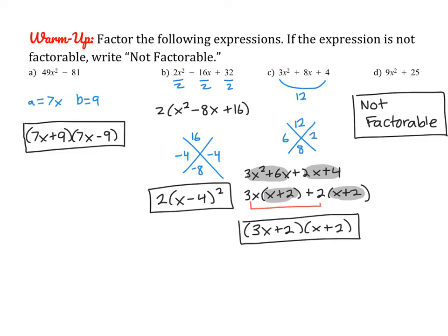Part D is not factorable because there is no such thing as sum of two perfect squares. There is difference of two squares, but there's no such thing as sum of two squares. If any of these methods you feel a little bit rusty on, please go back and watch the old videos because factoring is not something that's going to go away. We're going to use it all year, and you'll need it next year and any math class you take in the future.